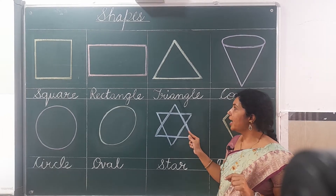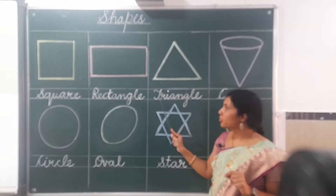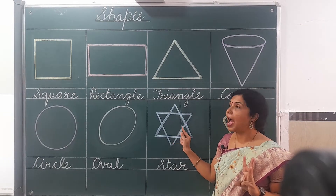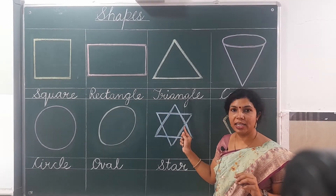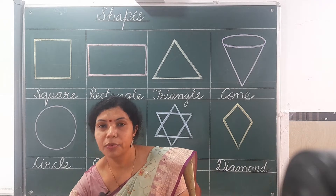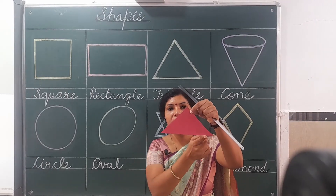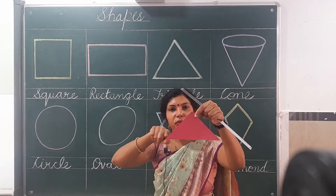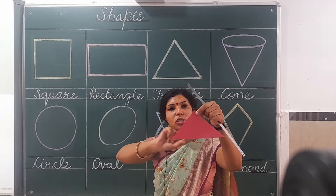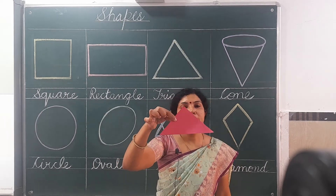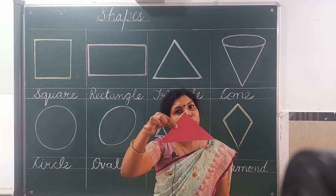Tri means three, and angle means this corner is an angle. So triangle. Here we have a shape with one, two, three sides and it is closed. So it has only three sides and is called triangle shape.